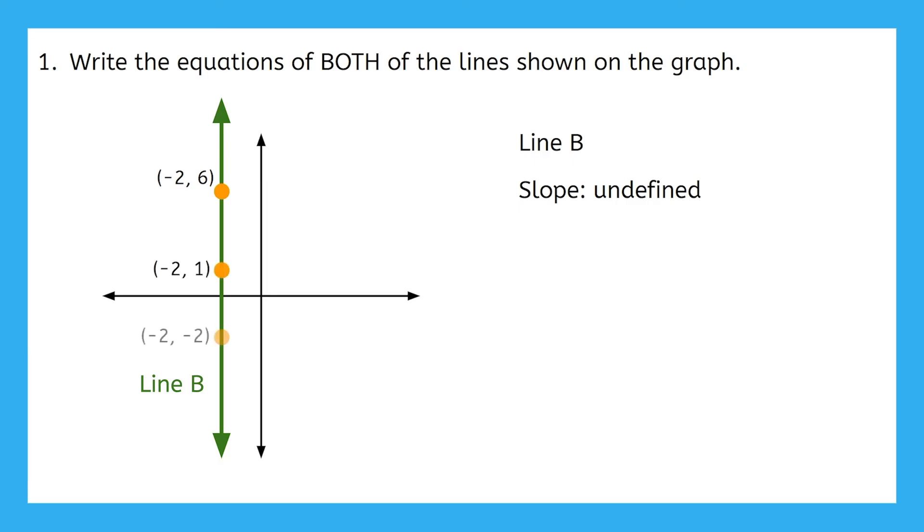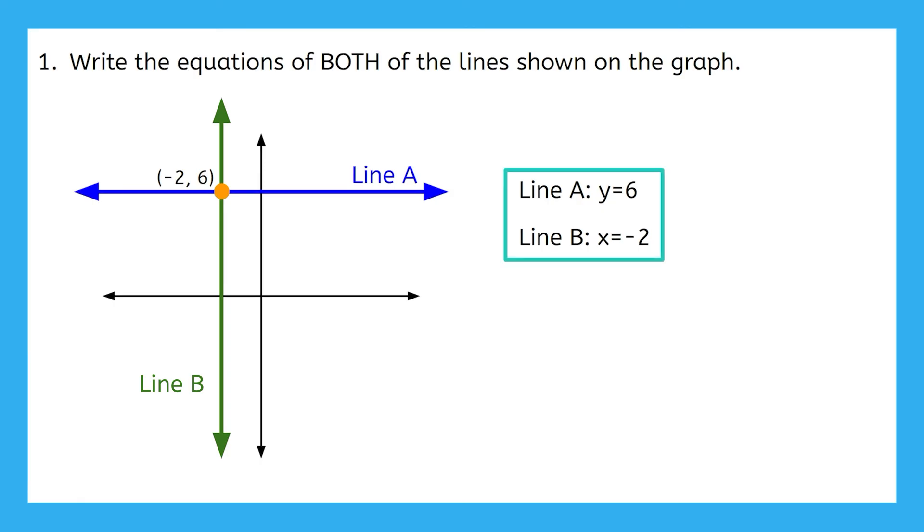I can imagine a few more coordinates if I need to. That might help confirm that all of the points on this line have negative 2 as their x-coordinate. So what would be the equation of the line? x equals negative 2. So here is our full final answer. Nicely done.